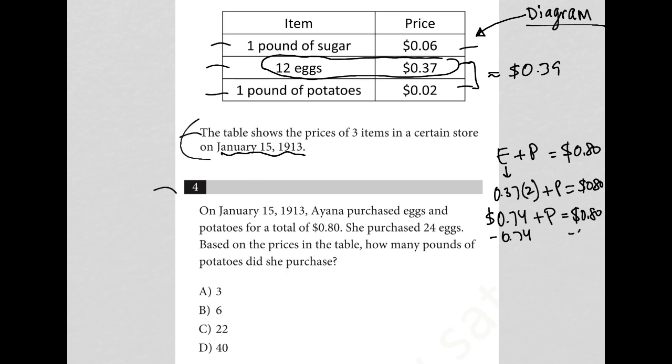$0.74 from both sides and my potatoes in terms of cost should be 6 cents. Now we know also from the table, again hence diagram we always go back there for reference, a pound of potatoes cost 2 cents.